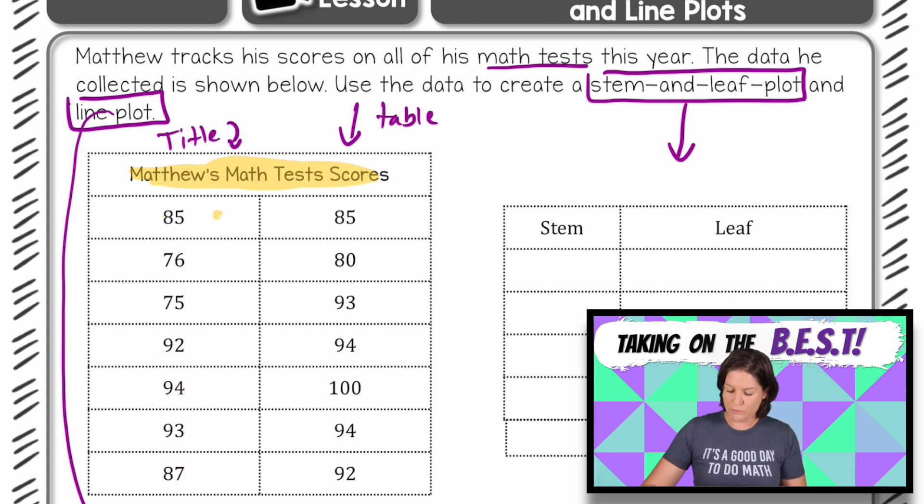In fact, we have 14 test scores in this table. The first thing that we're going to do is take the data from the table and place it onto a stem and leaf plot.